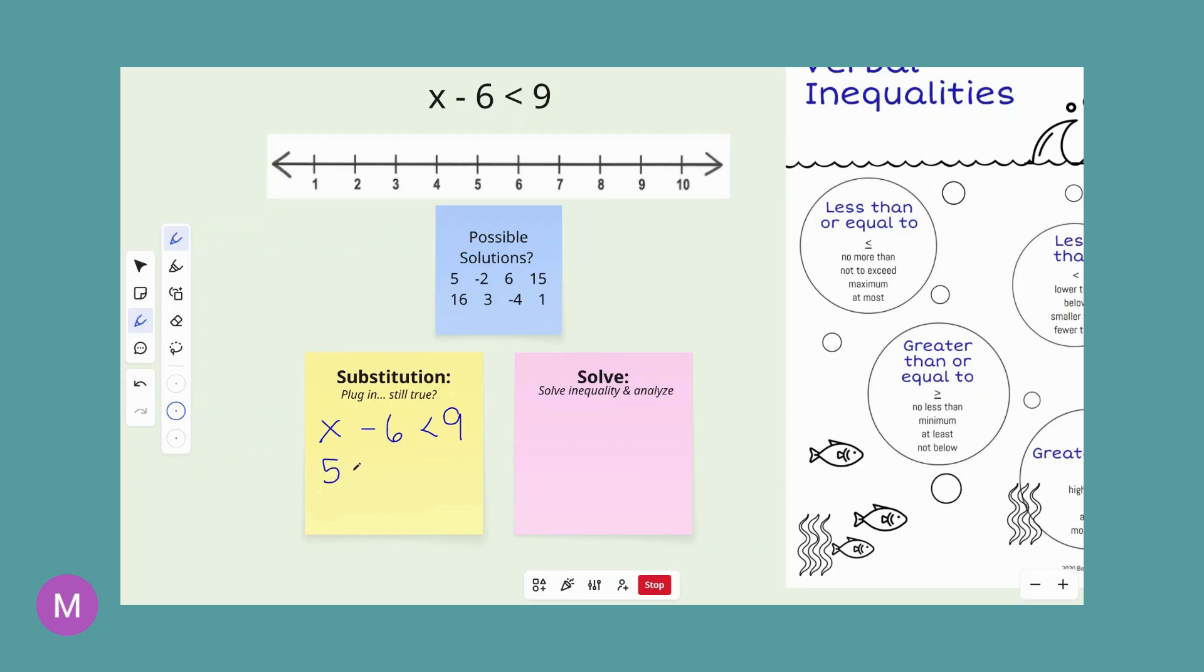So we're checking 5 first. So 5 minus 6, is that less than 9? 5 minus 6, we have a war going on here, positive and a negative. The negatives are going to win by 1. Is negative 1 less than 9? Yes, I would rather have $9 than owe somebody $1. So 5 is a possible solution for this inequality. So now we have negative 2 minus 6. We have a party of negatives, so we're going to be negative in the end, and there's 8 of them. Is negative 8 less than 9? Yes, that is a possible solution.